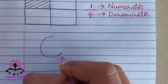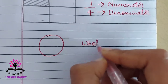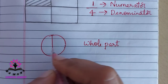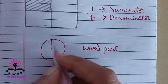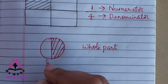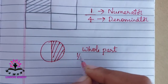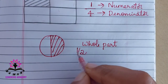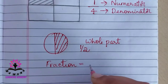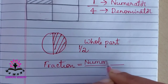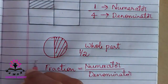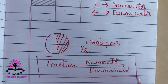Consider this circle as the whole part. I will divide it into two equal parts — this part is equal to that part. Then I shade one part, meaning one of the two equal parts is shaded. That is why it is one by two. A fraction is always equal to numerator divided by denominator.